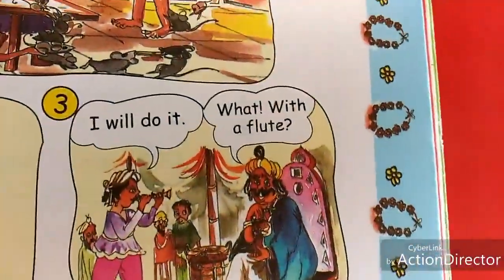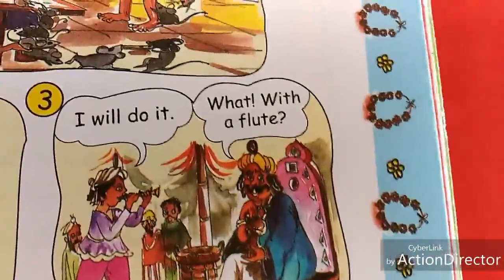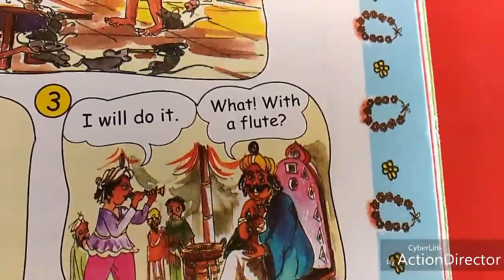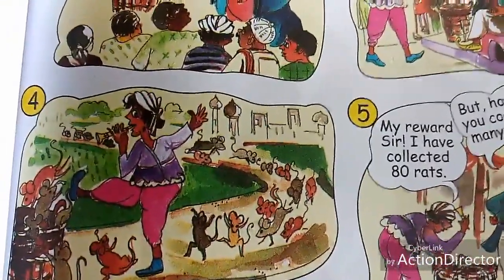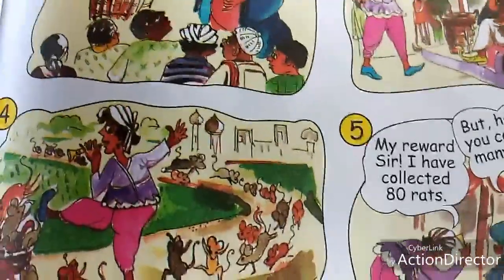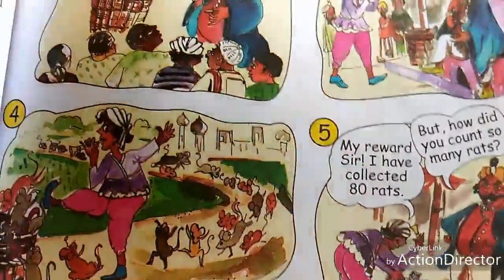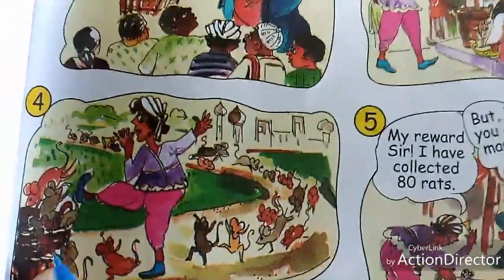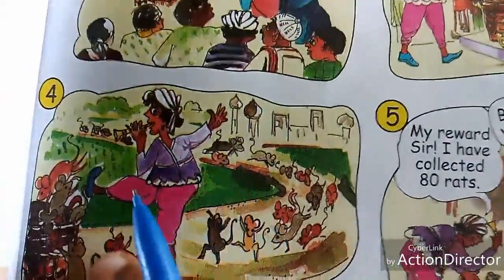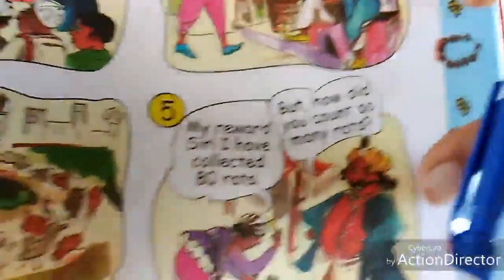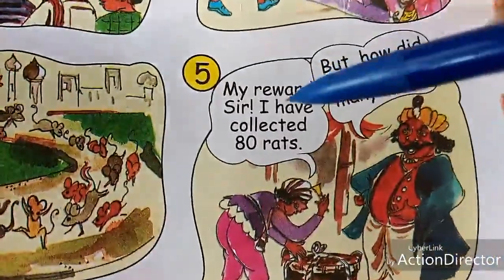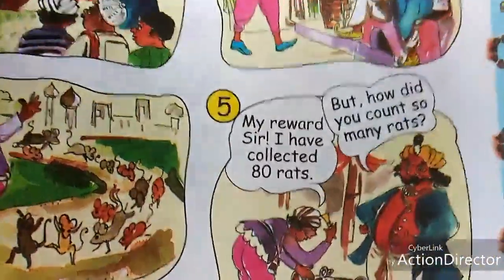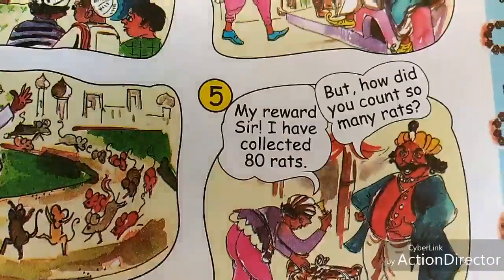One flute man said, I will do it — with my flute. The king was shocked: with the flute? The flute man, using the flute, caught all the rats. While playing the flute, the rats followed behind the flute man, and he put all the rats into the basket. The flute man said, My reward, sir — I have collected 80 rats.